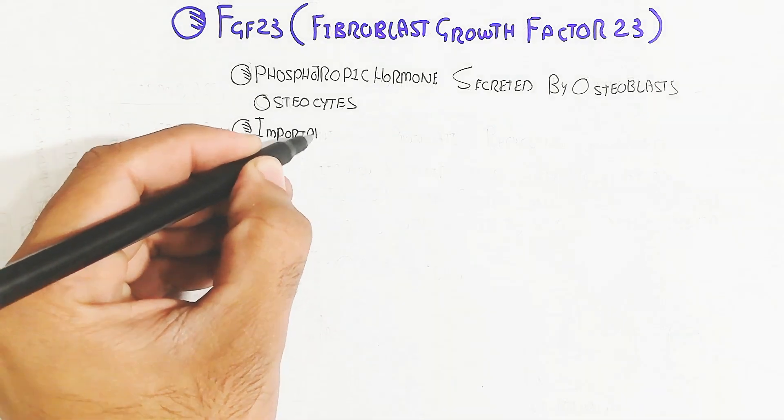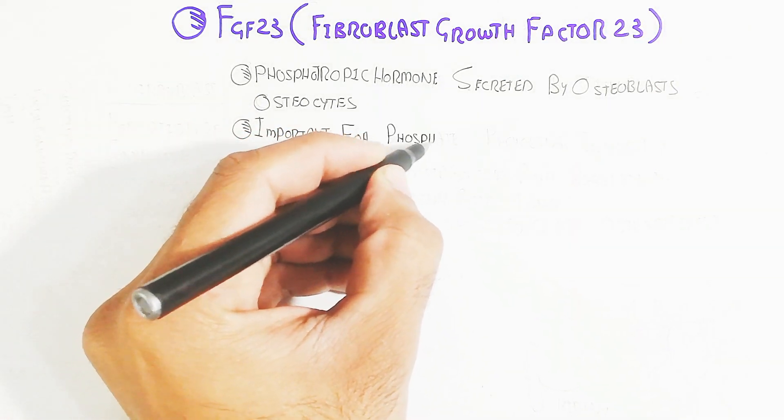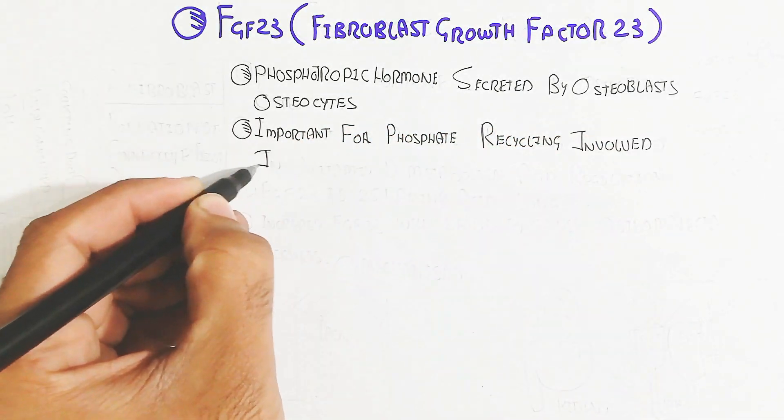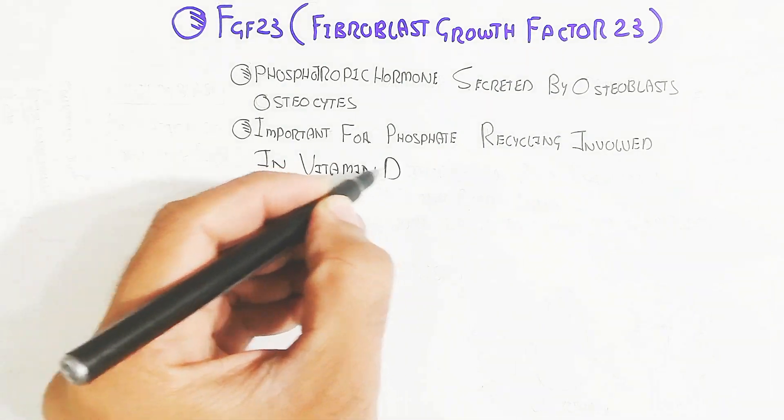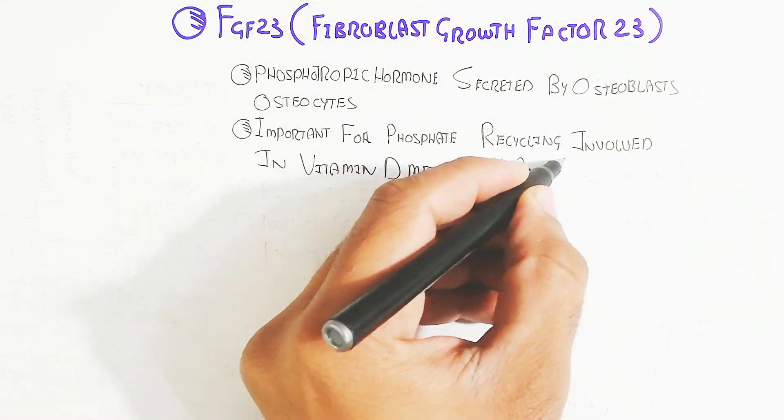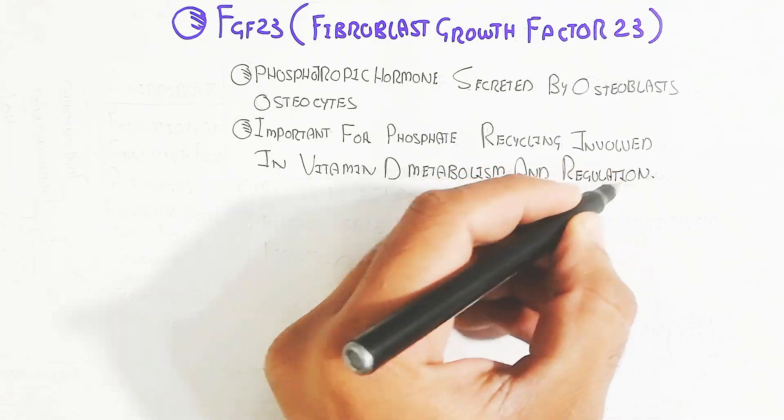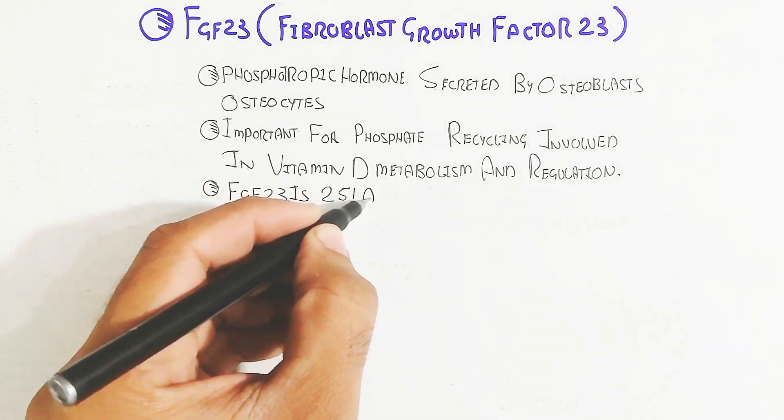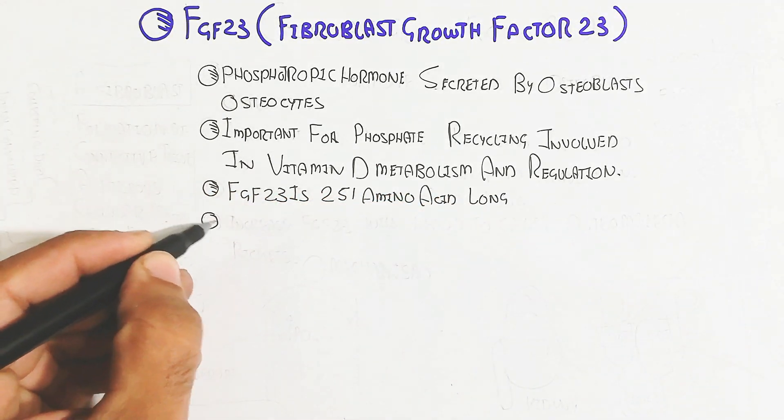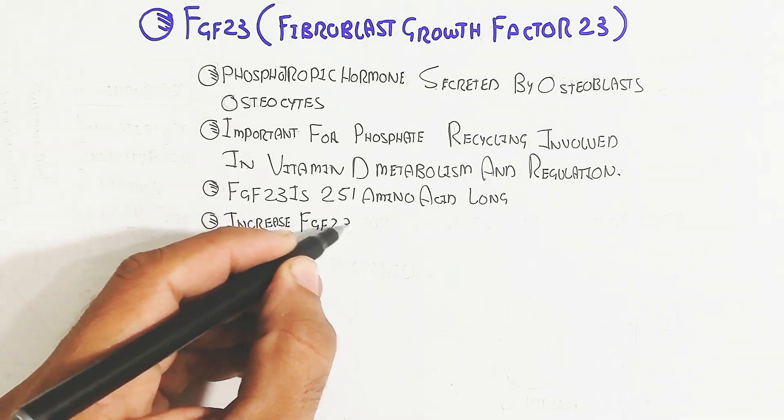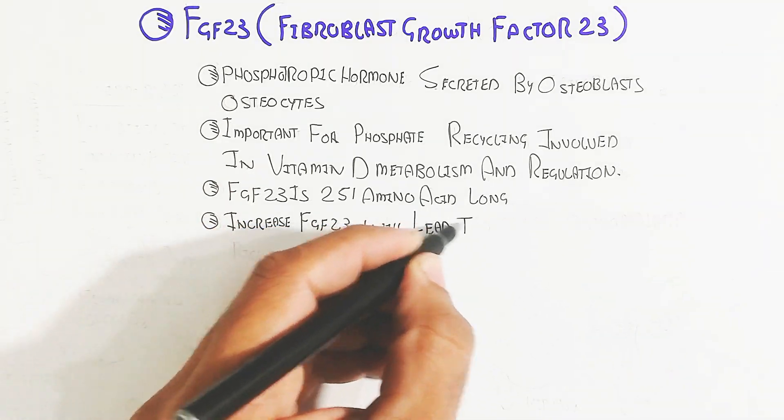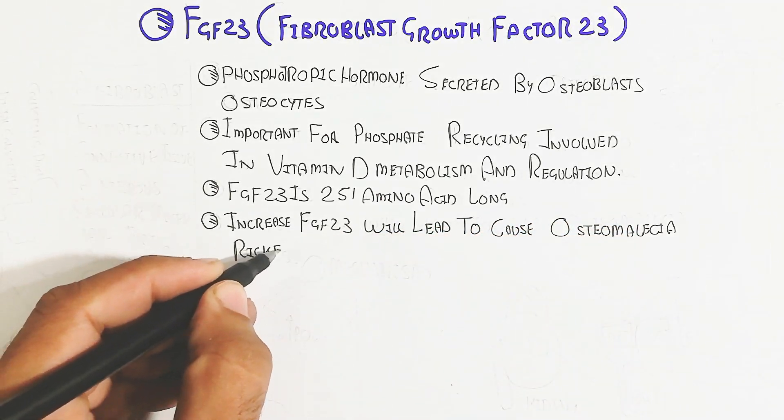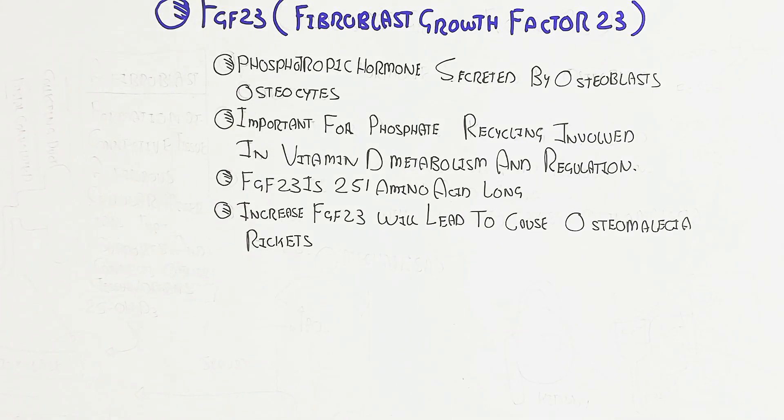So when the phosphate will be increased in the blood circulatory system, the best stimulator important for phosphate recycling is involved in vitamin D metabolism and regulation. FGF23 is 251 amino acid long, and increased FGF23 will lead to osteomalacia and rickets. Why? Because deficiency of phosphate and calcium in the blood will lead to not depositing in the bones. So the excessive amount of FGF23 is harmful.